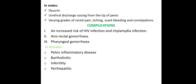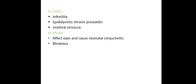Complications include increased risk of HIV infection and chlamydia co-infection. Anorectal and pharyngeal gonorrhea are serious complications. In females, pelvic inflammatory disease, infertility, and perihepatitis can occur. In males, epididymitis and chronic prostatitis, as well as urethral stricture, can develop. Gonorrhea can also affect the eyes and cause neonatal conjunctivitis, sometimes leading to blindness.